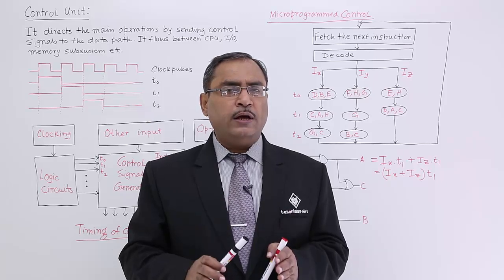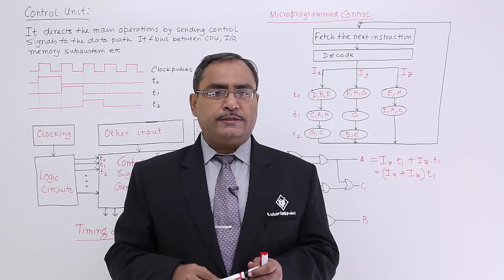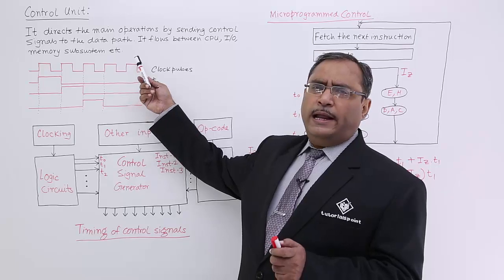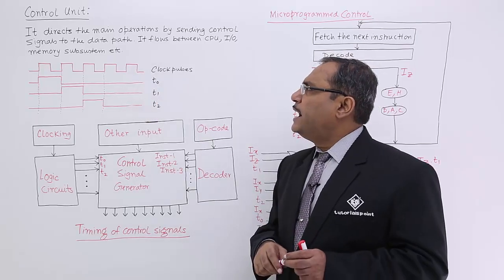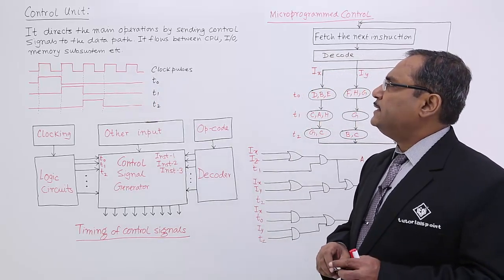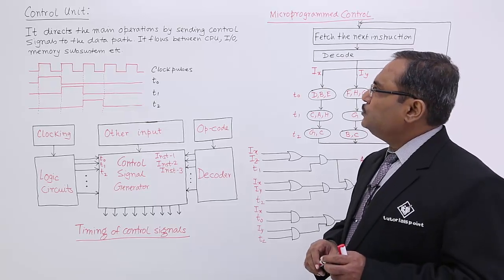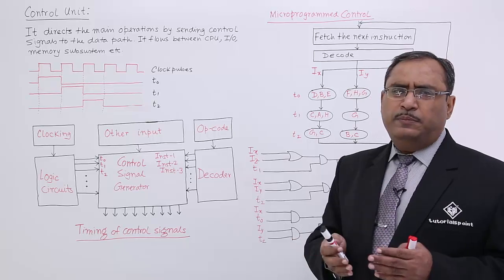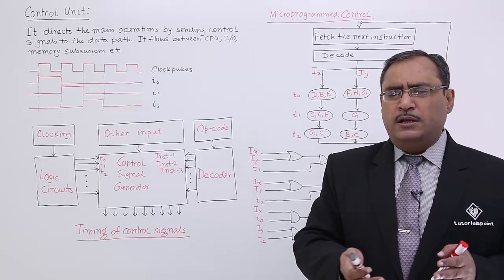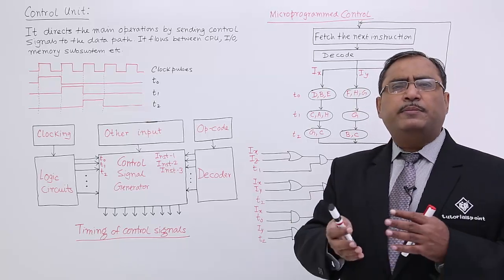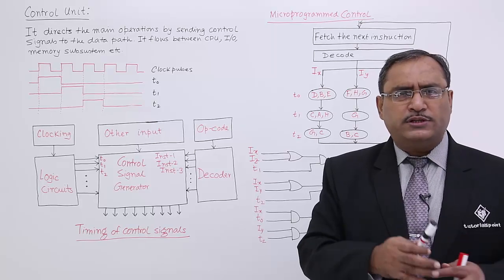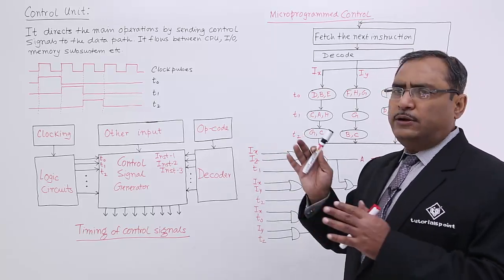Control signal will be generated from the control units. As a one line definition, it directs the main operations by sending control signals to the data path. It flows between CPU, it may be between the memory, may be the external devices, may be some other devices, internal ports and so on. It will decide all these issues.